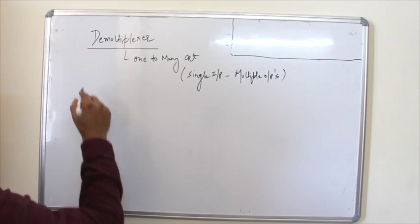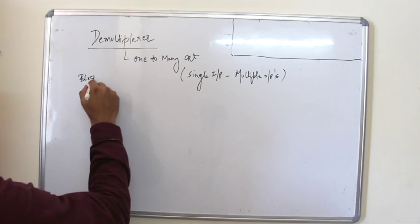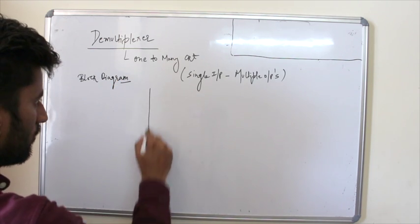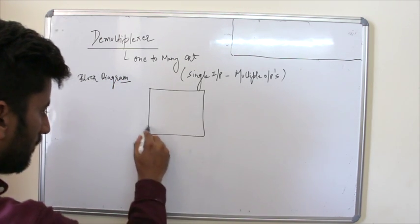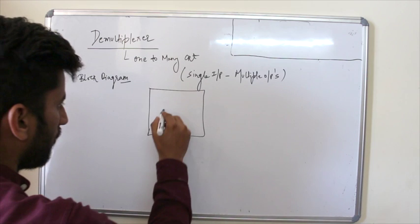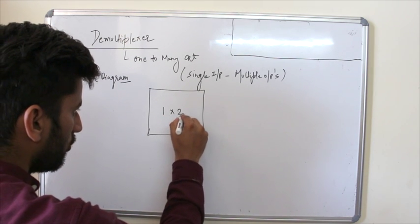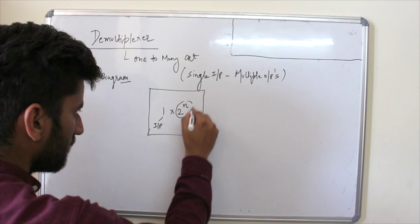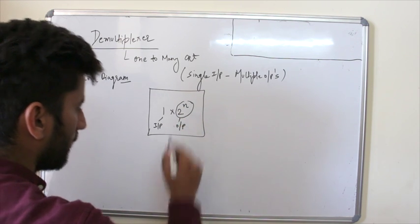So let's start with the block diagram. So the format for demux is single input into 2 raise to power n. So this is representing input and this is representing my output.